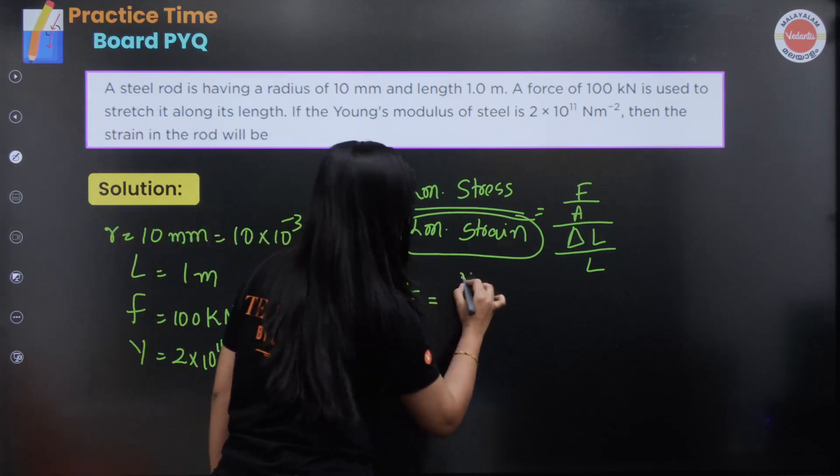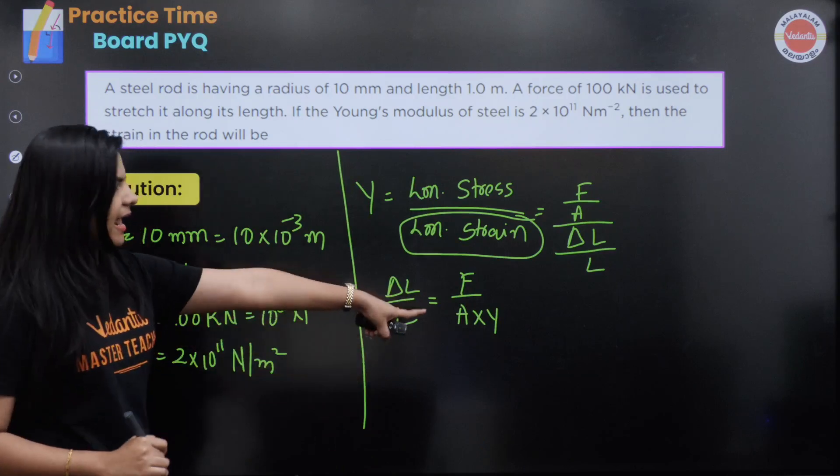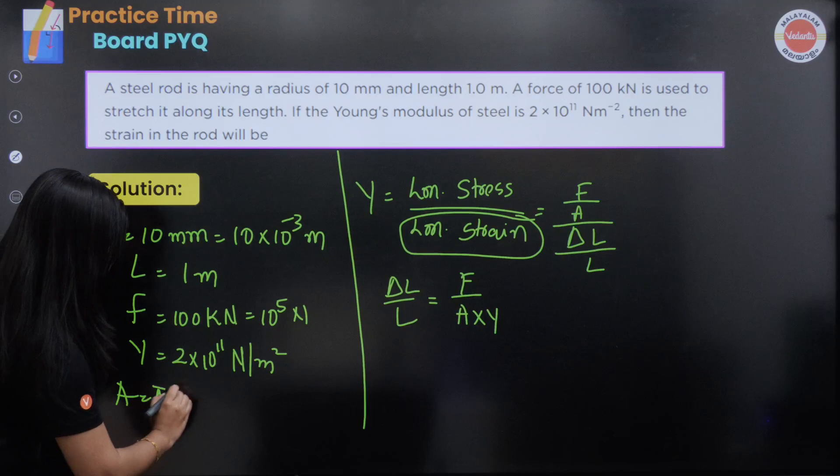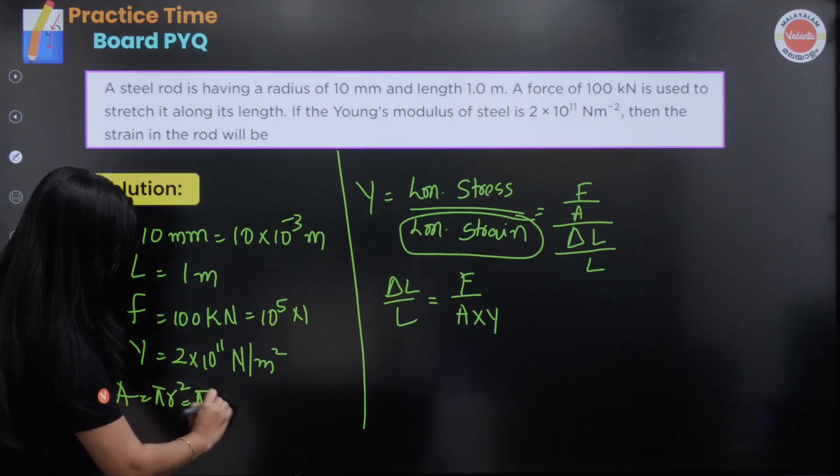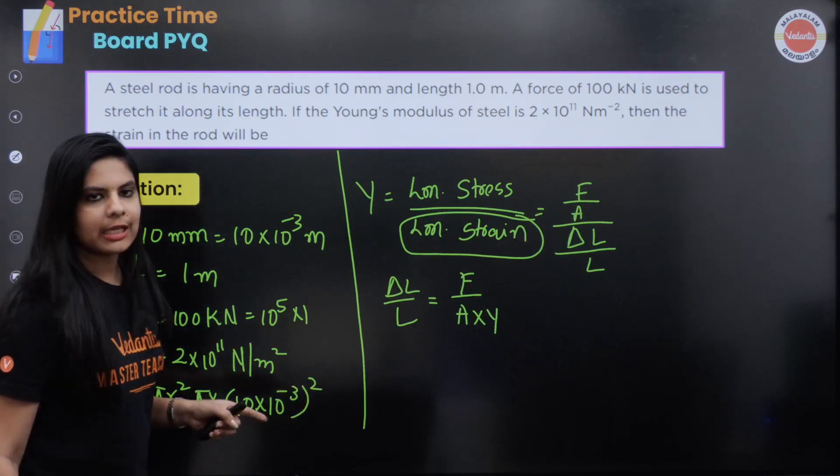Area is equal to pi r square. So, pi into r is 10 into 10 to the power minus 3 all square.